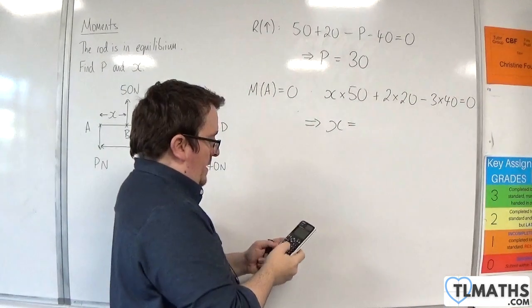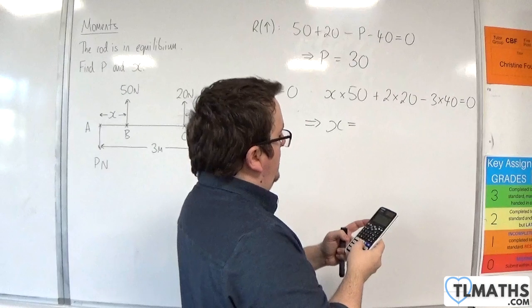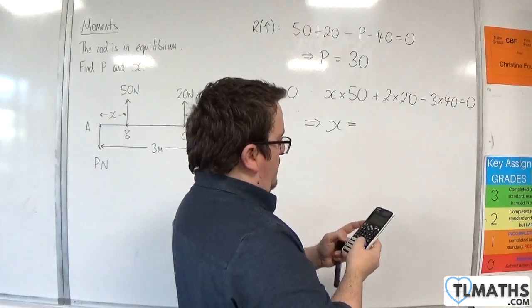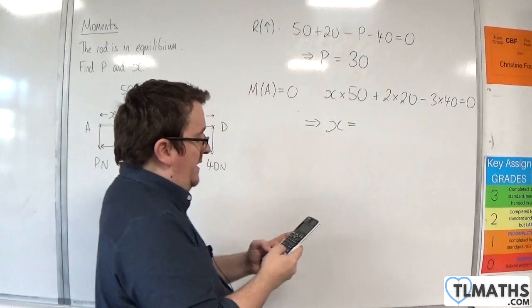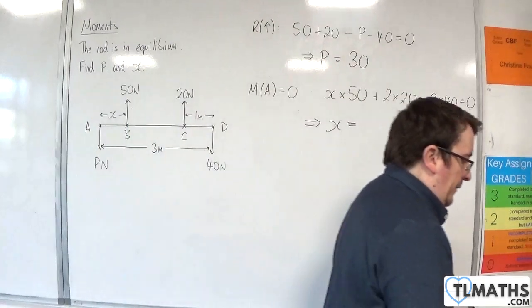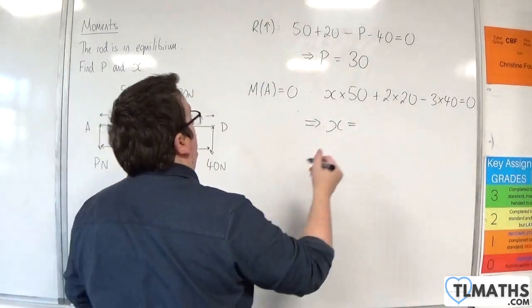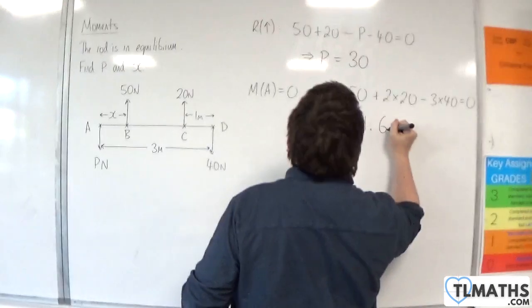So we have 2 times 20 take away 3 times 40. Move that onto the other side, so we've got 80 divided by 50, which is 8 fifths or 1.6 metres.